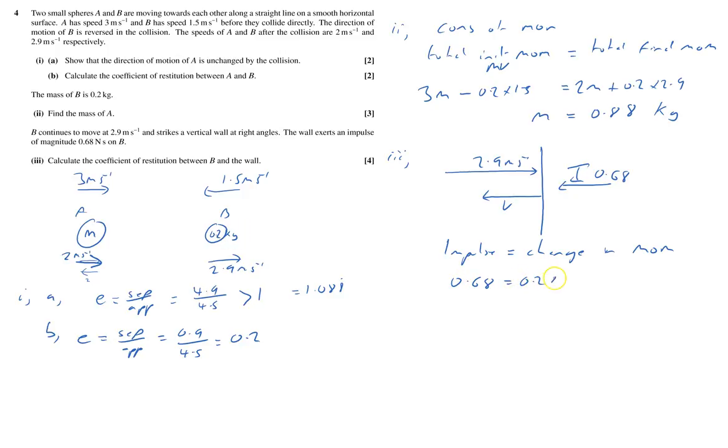So it's 0.2 times by 2.9 minus, but this will be now minus V. So I've taken that to be positive, 2.9 to be positive. So minus, that's going to be minus 0.2 times by V. Well, technically the V is minus, but it doesn't really matter.